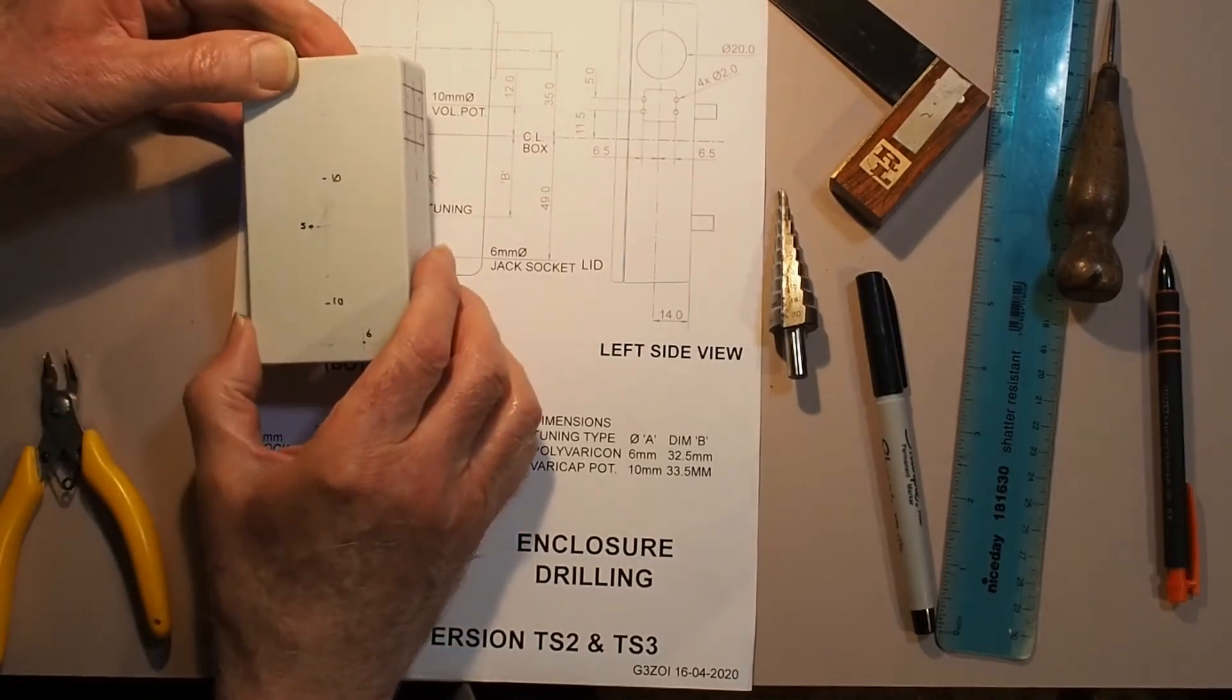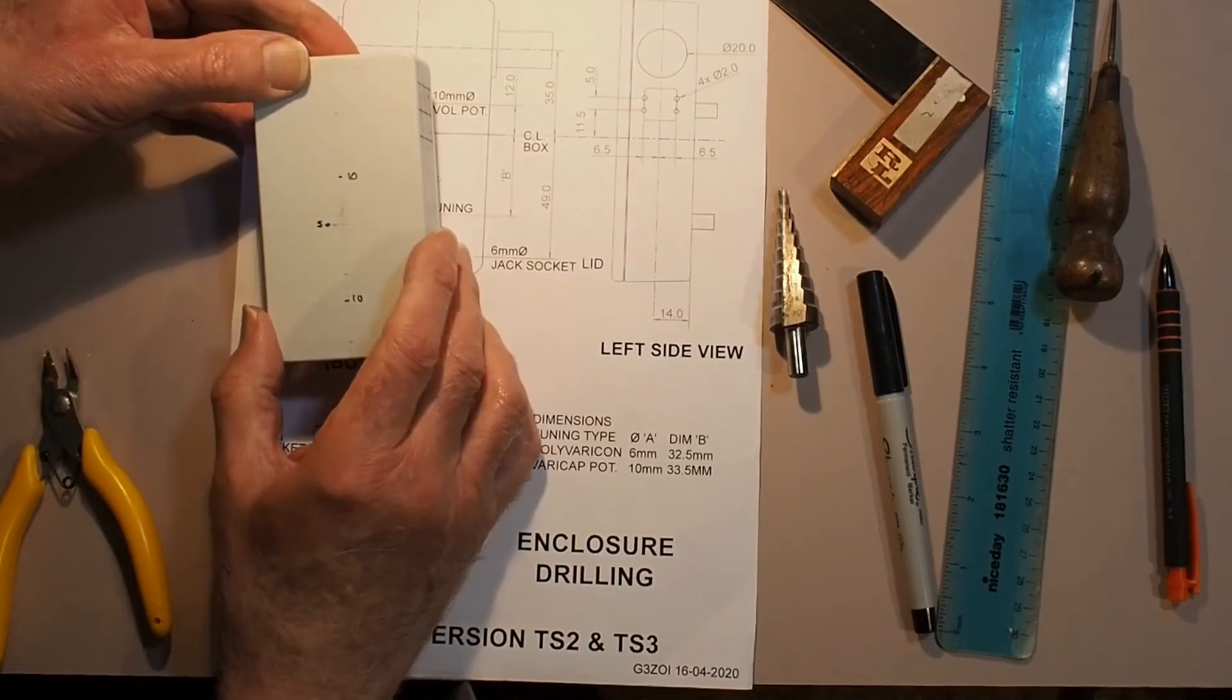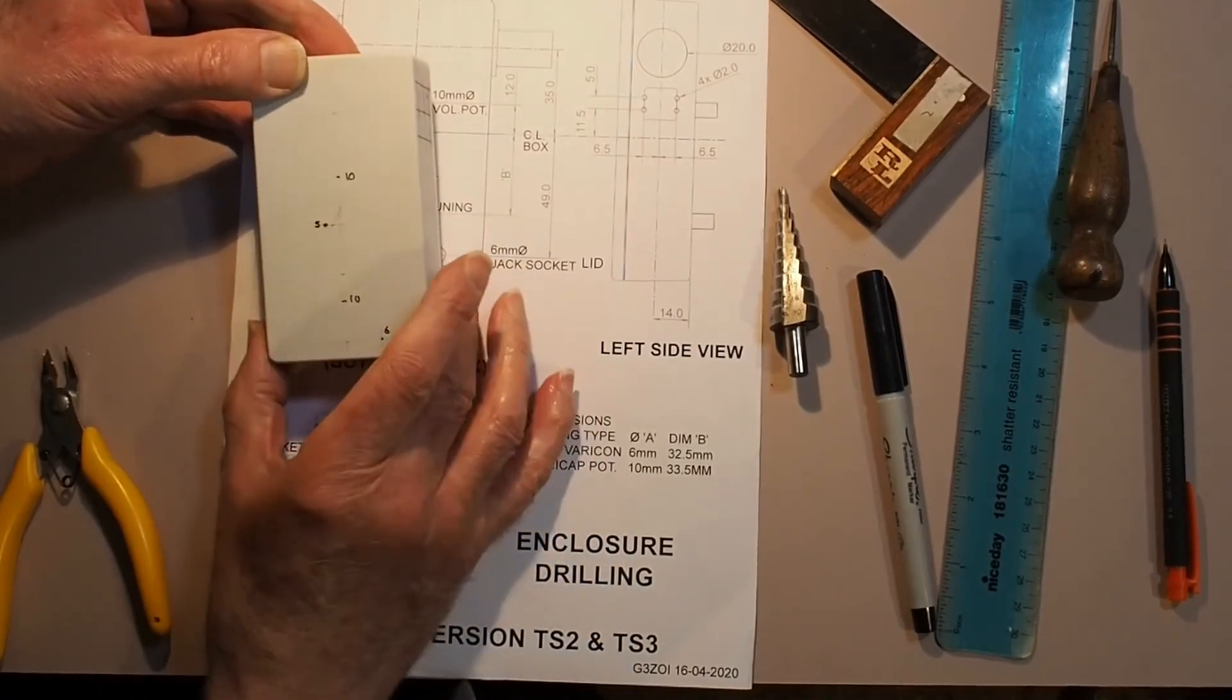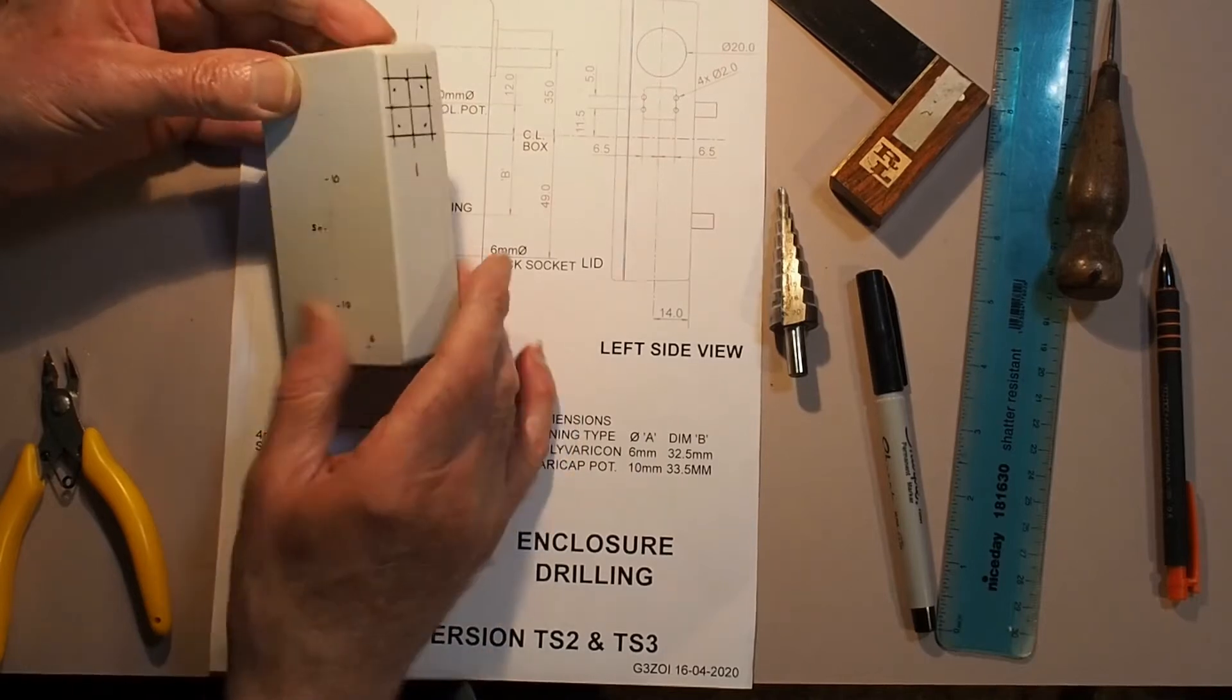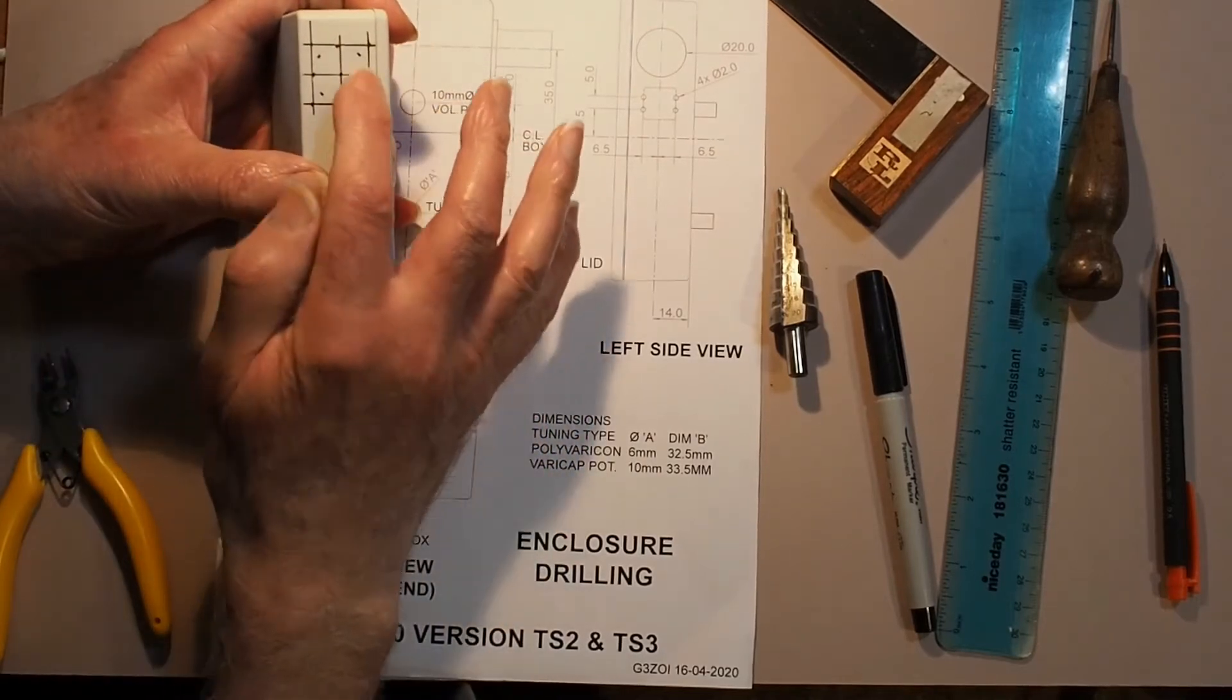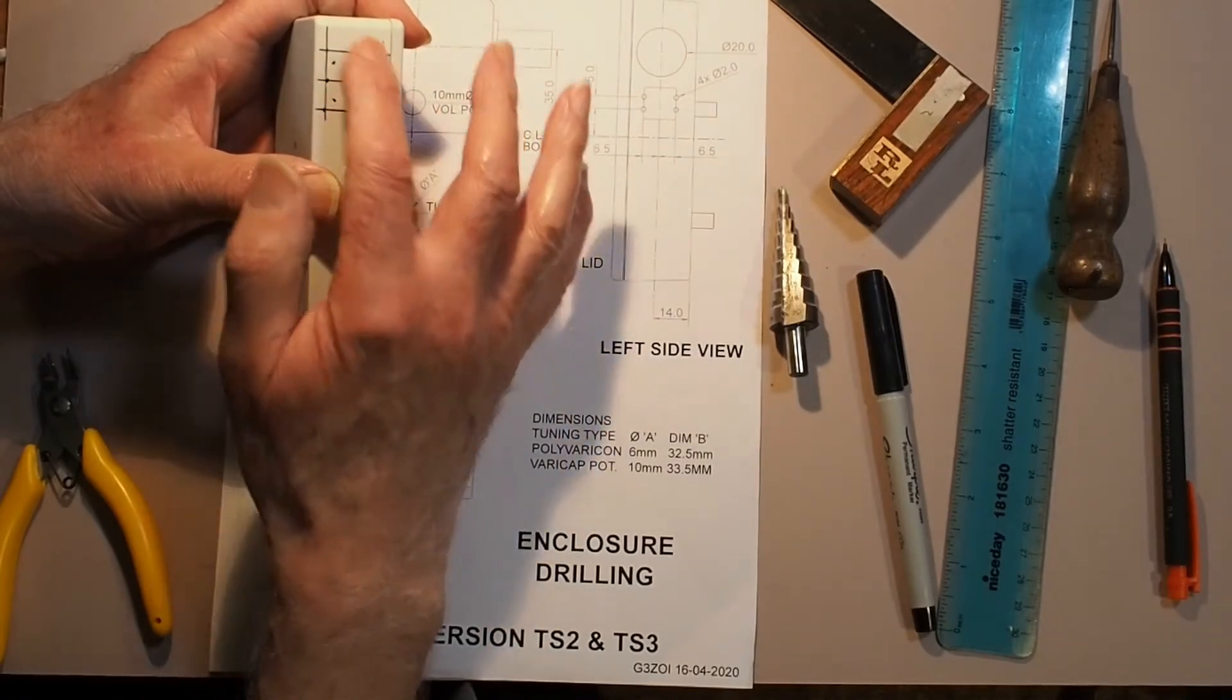As I said before, really it's quite straightforward. It's worth rechecking the positions of the holes before you actually drill them, but the most difficult one to drill is the 20 millimeter hole that you need for the ferrite rod assembly.